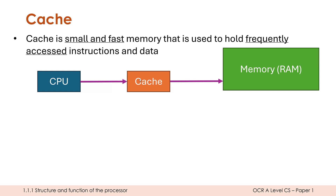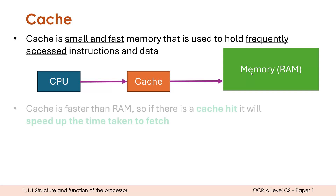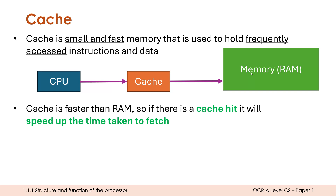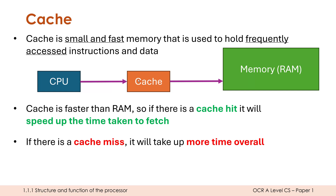If I find what I need in cache, that is called a cache hit. If I go to cache and it's not there and I've got to go check RAM, that is called a cache miss. Because cache is a lot faster than RAM, if there is a cache hit it will speed up the time taken to fetch. If it's not in cache, I've basically wasted my time — I've wasted time checking cache before checking RAM, so overall it would take up more time.